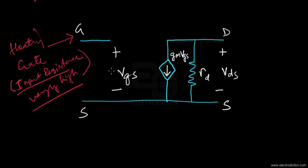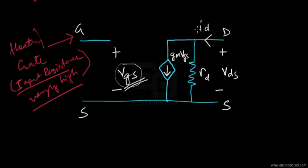The input signal V_GS can be referred to as a sinusoidal signal. We can see that the output current — the drain current ID — is basically controlled by this input signal V_GS at the gate input. What happens inside the semiconductors is quite complex to understand, so engineers have utilized basic circuit theory and a two-port network model to come up with an equivalent circuit to decipher the working of the FET.